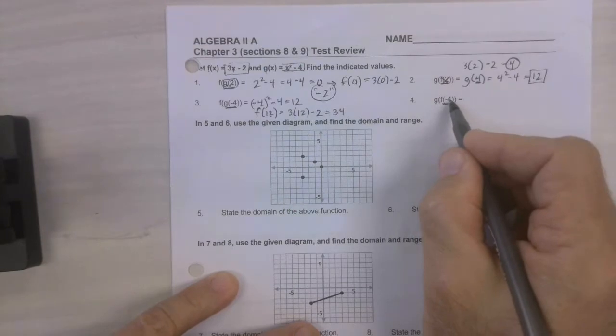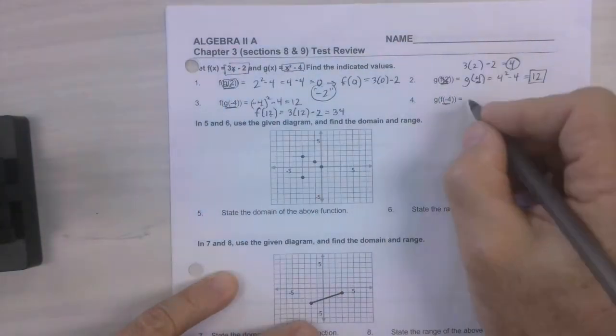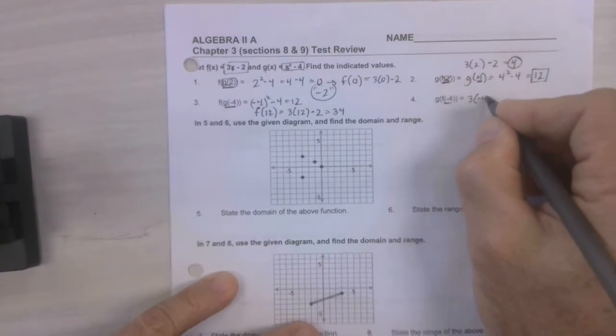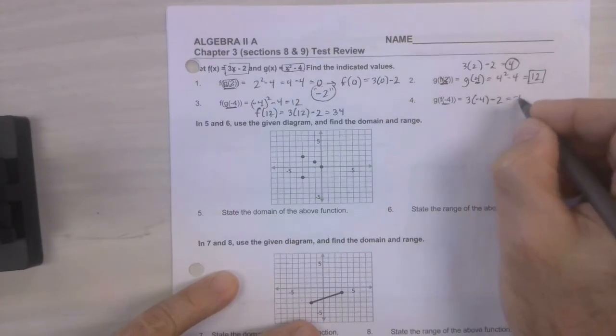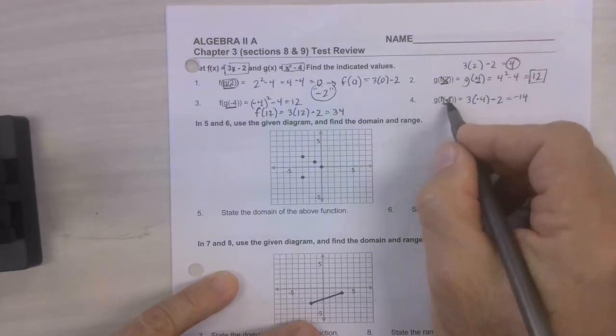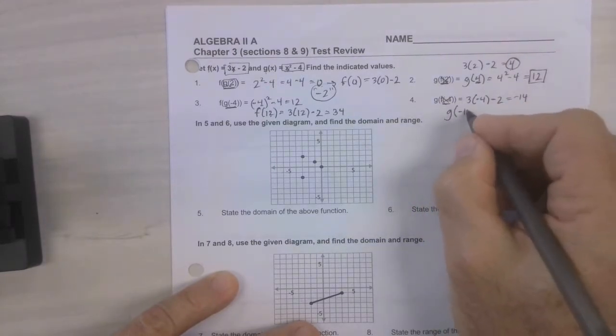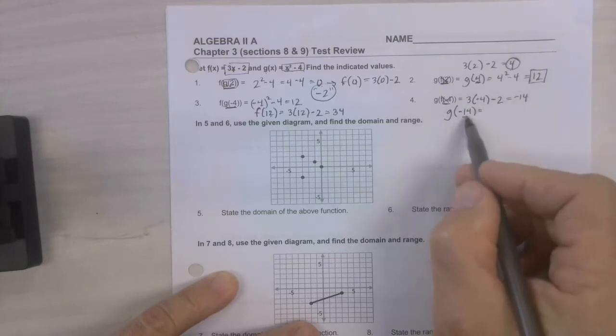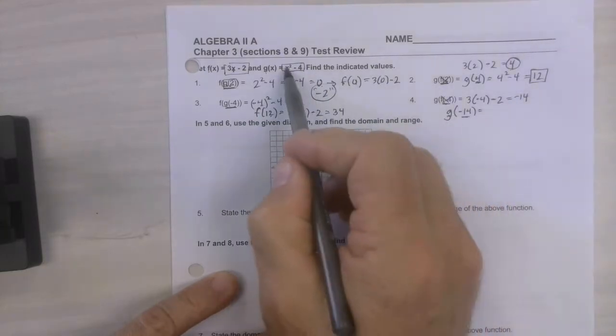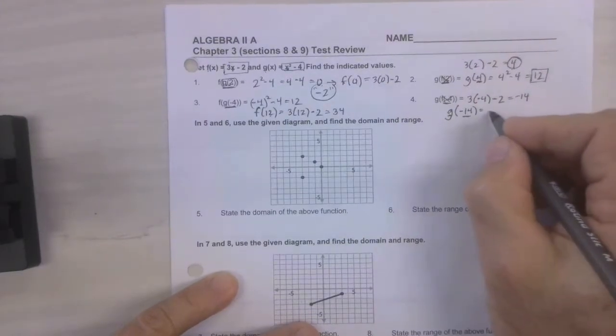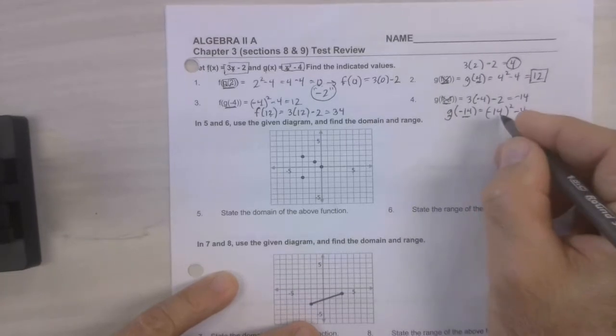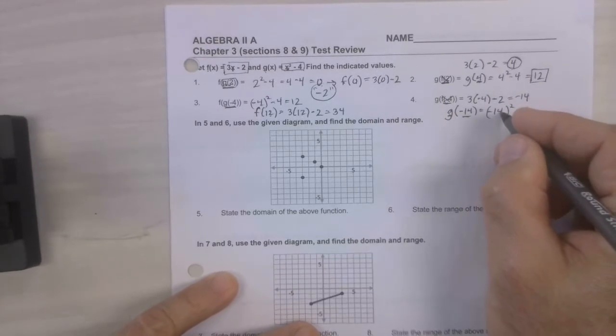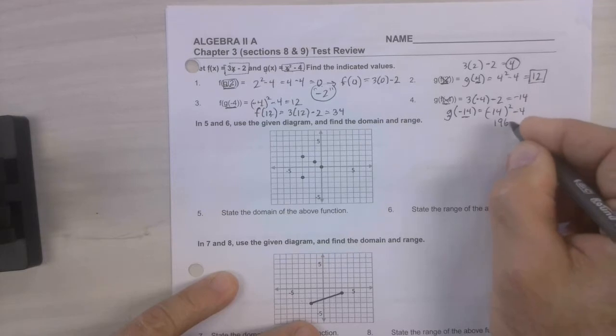Last one. You've got to put the negative 4 into f, which is right there. So 3 times negative 4 minus 2. Negative 12 minus 2 is negative 14. So that comes out. Now we've got to find g of negative 14, which means put that in to the equation defined by g, which is right here. So that'd be negative 14 squared minus 4. Well, negative times negative is positive. 14 times itself is 196 minus 4 is 192.